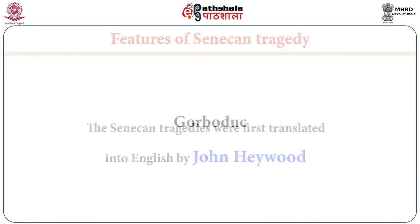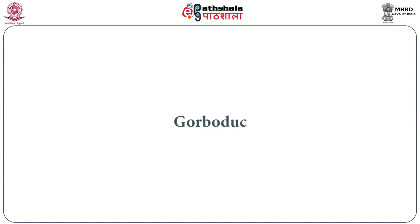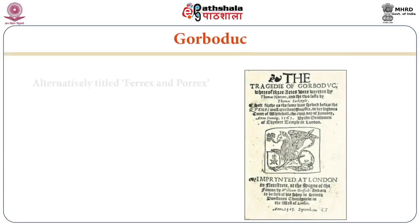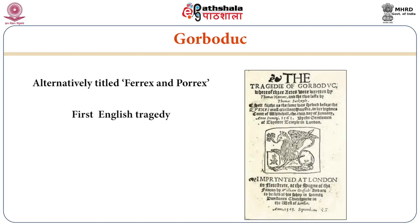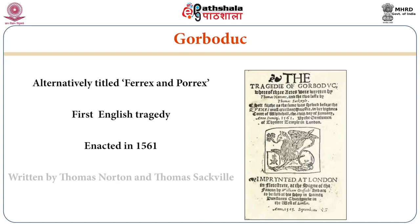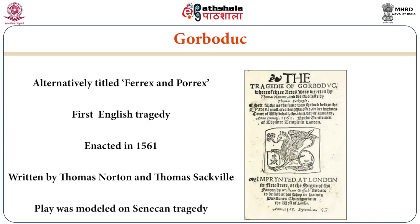Now, we must discuss at length the first English tragedy, called Gorboduc — alternatively titled Ferrex and Porrex. The play was the first English tragedy and it was enacted in the year 1561 AD. It was written by Thomas Norton and Thomas Sackville — also called Sackville and Norton's tragedy. The play was modeled on Senecan tragedy, whose features we discussed in the previous phase.